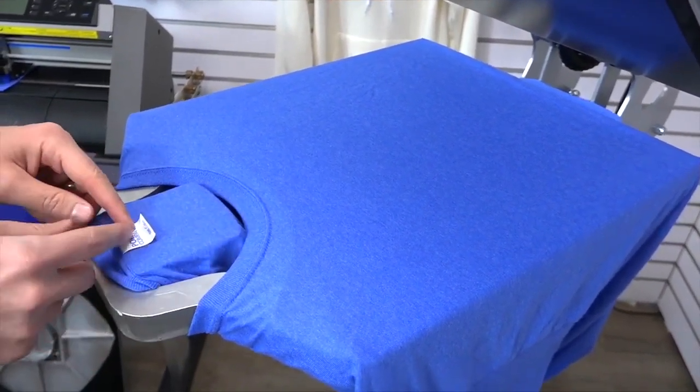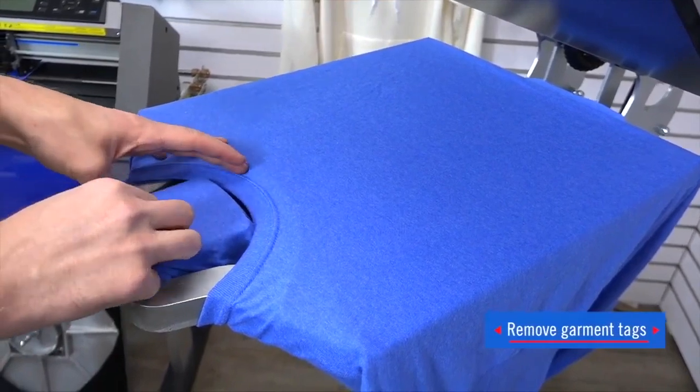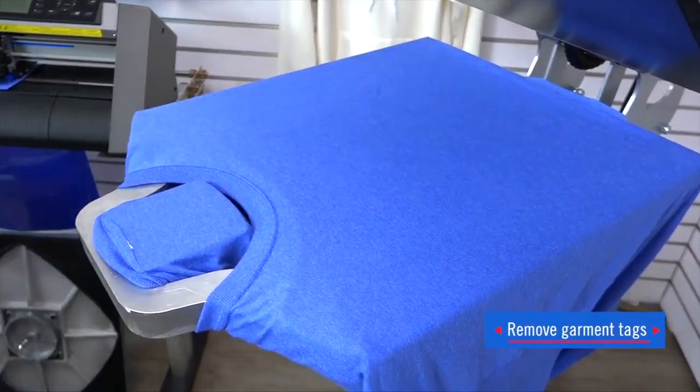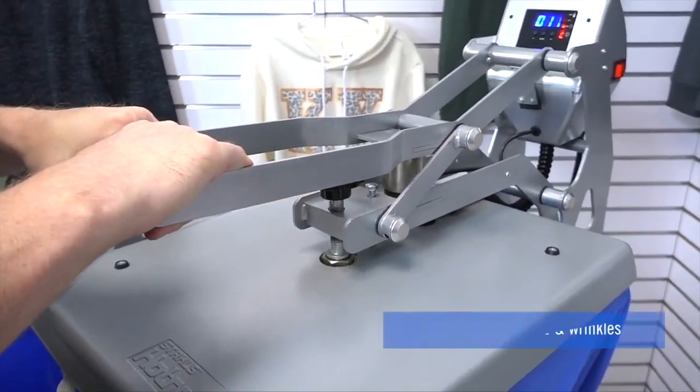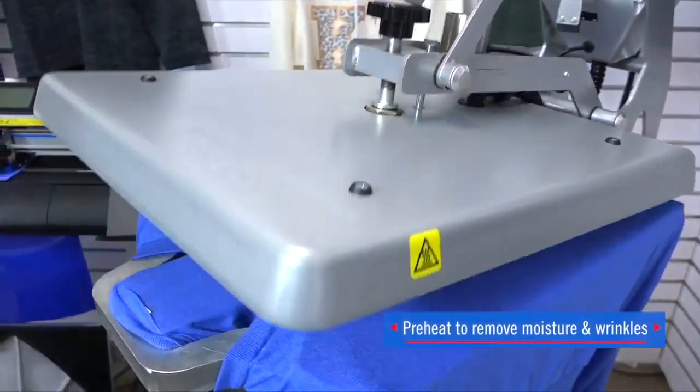Very simple. Most of the garments in the industry have tear away tags now. So you can just remove that from your shirt. I'll still want to conduct the preheat process to prepare both areas for printing, removing the moisture and wrinkles.